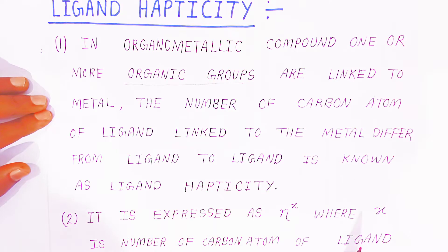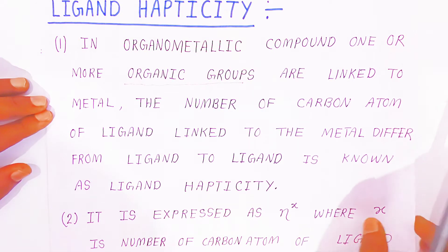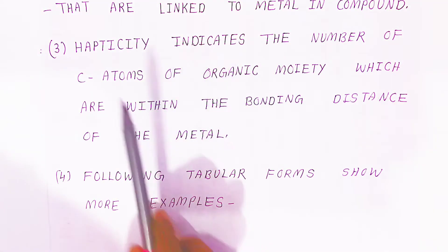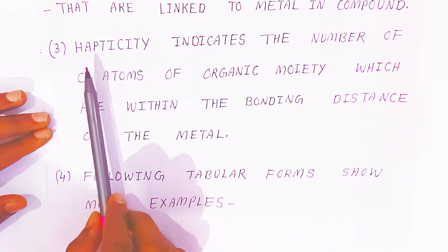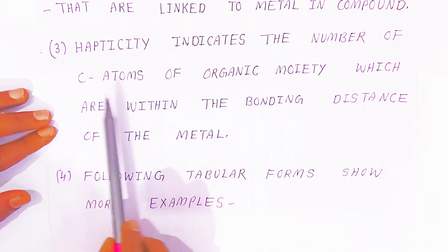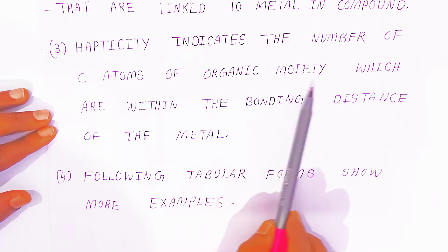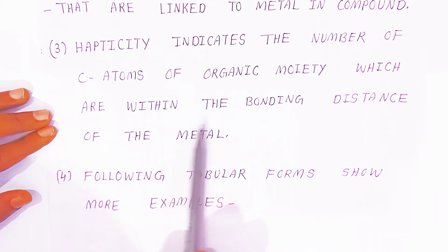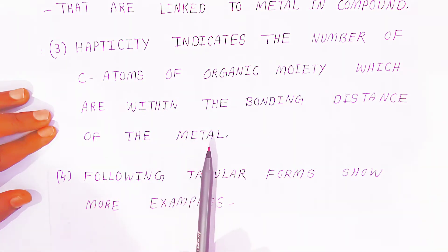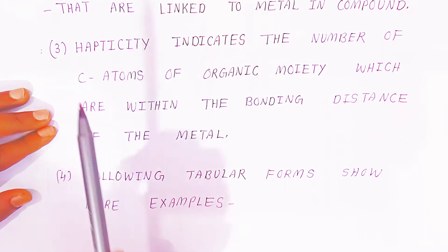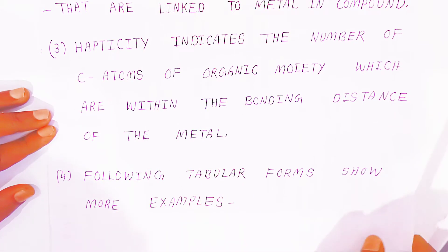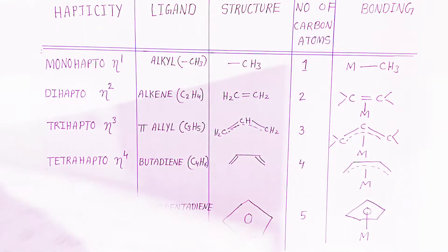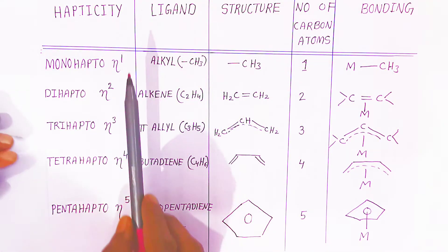Hapticity indicates the number of carbon atoms of the organic moiety which are within the bonding distance of the metal. The following table shows more examples of different types of ligands based on hapticity.